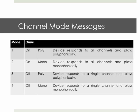Channel mode messages are very important. There are four modes: one, two, three, and four. They are related to what we call Omni. If Omni is on, the device will respond to all MIDI channels — any MIDI channel coming in and this device will respond. If Omni is off, that device must be set to a particular MIDI channel and will respond only to that channel. In both cases, whether Omni is on or off, you can also be in poly or mono mode. Poly means polyphonic — several notes at a time. Monophonic means only one note at a time.